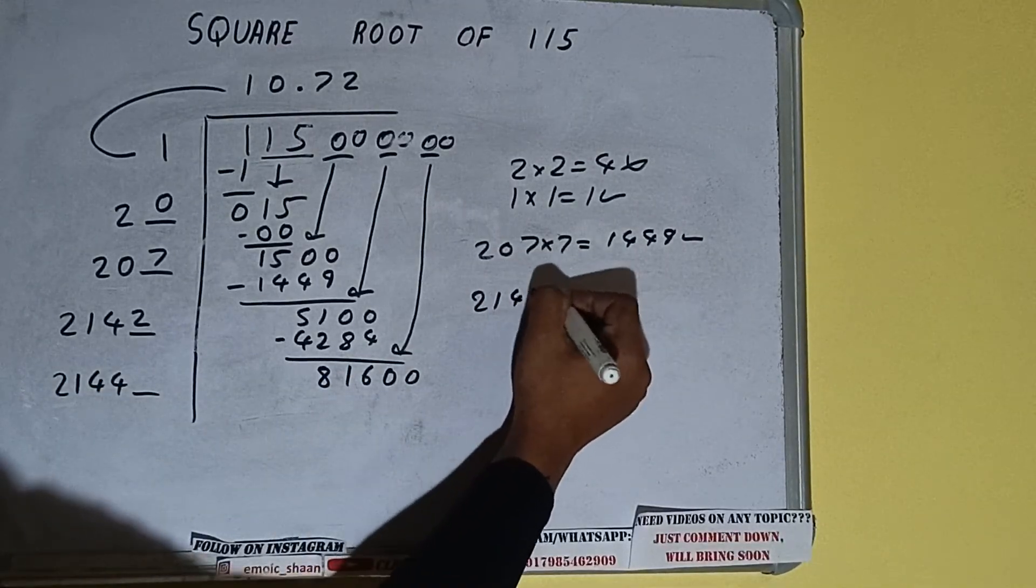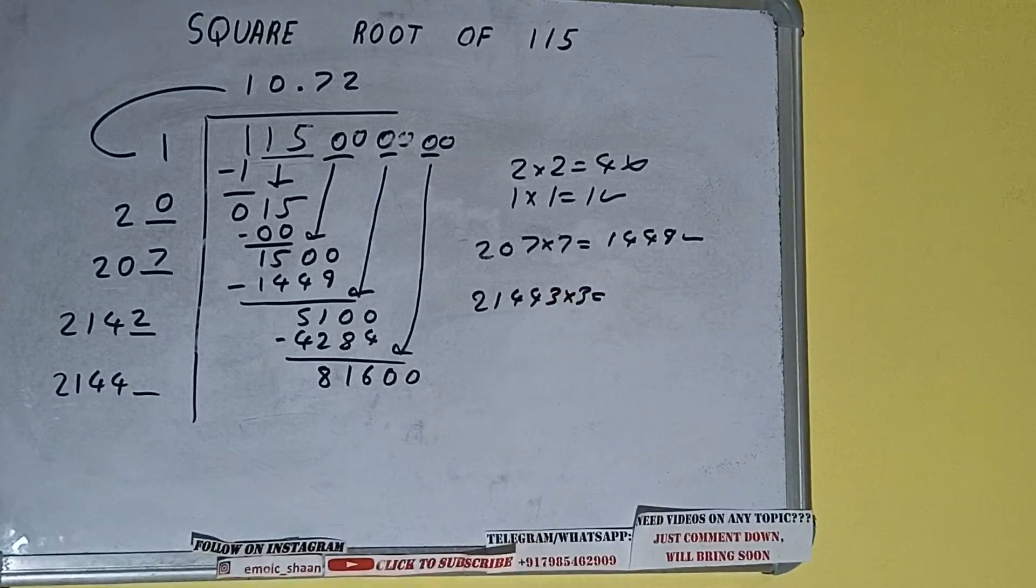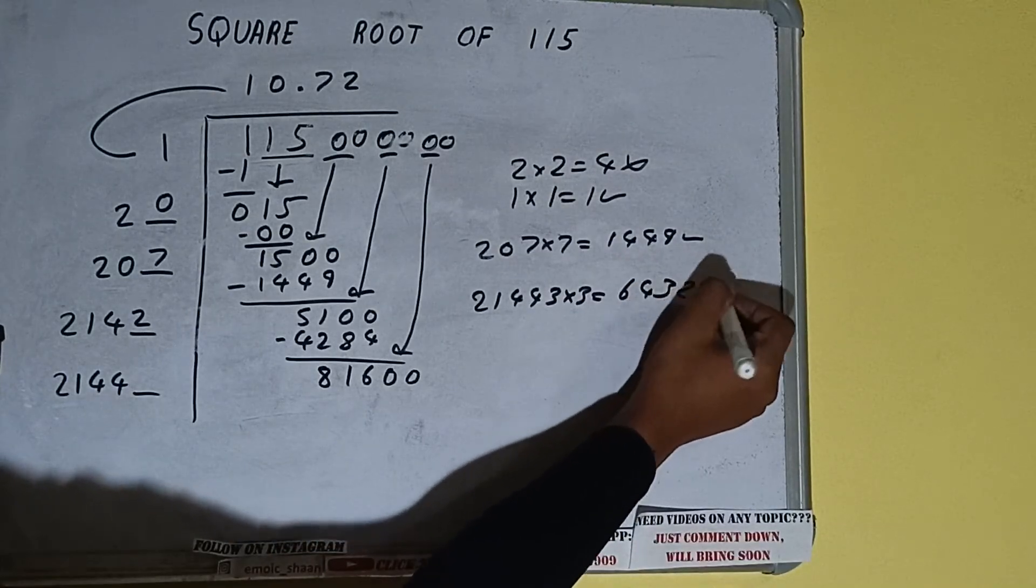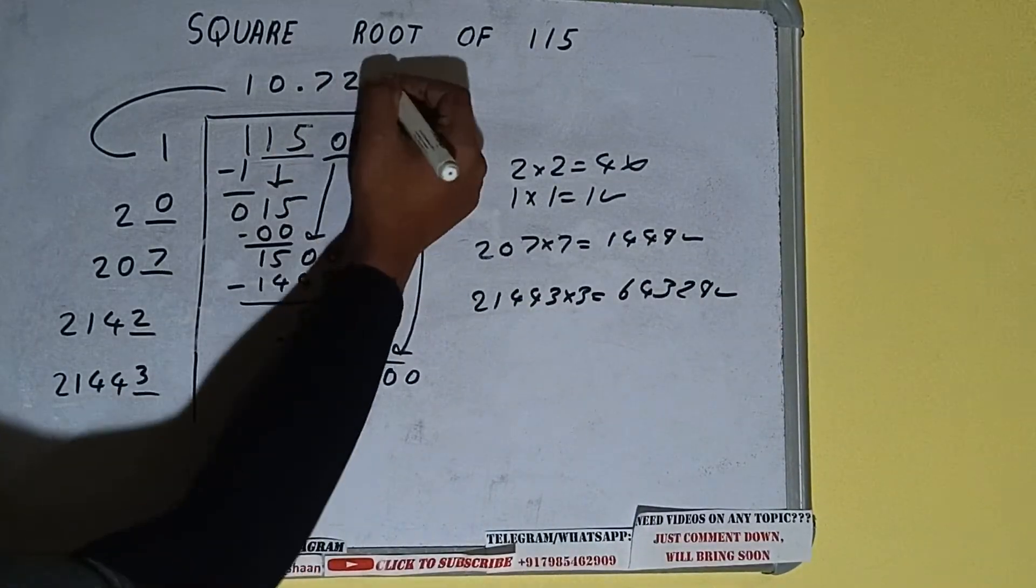21443 into 3 we can try. And we'll be getting 64,329 which is good to take. So 3 here and 3 here.